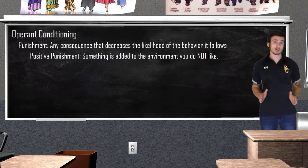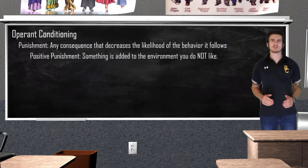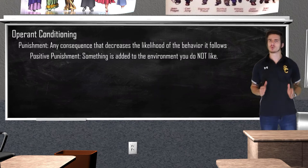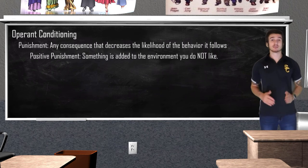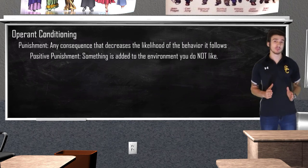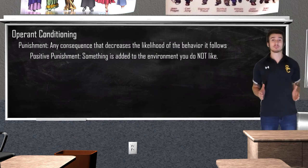When Stark was a puppy, I let him sleep on my bed and woke up to find he went to the bathroom right on my sheets. I told Stark 'bad dog' and made him go outside. This is considered positive punishment — I added something to Stark's environment, a verbal reprimand, to try and stop this behavior from occurring again.